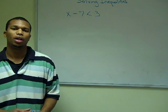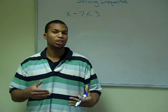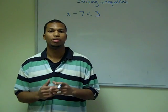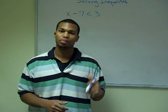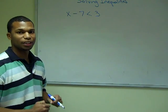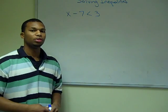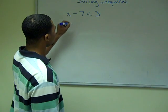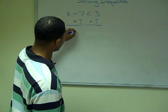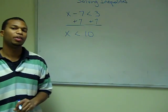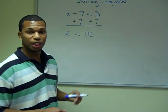Now let's go on to solving some inequalities. Solving inequalities is very similar to solving equations — if you're a bit confused, you may want to review the video on solving equations. Let's get to this problem: X minus 7 is less than 3. In order to isolate X, we will use the addition principle and add 7 to both sides. Once we do that, we get X is less than 10. We can indicate this on a graph by putting 10 on a number line with an open dot.